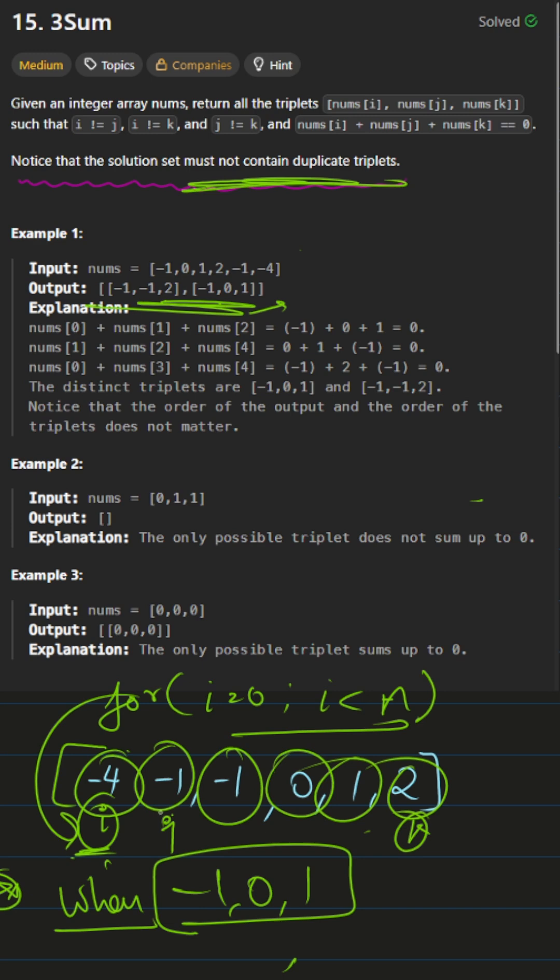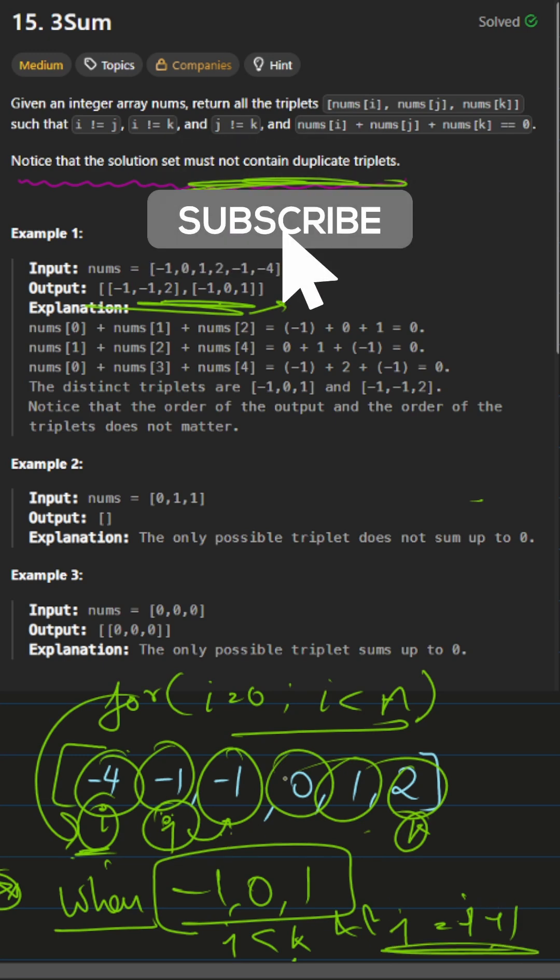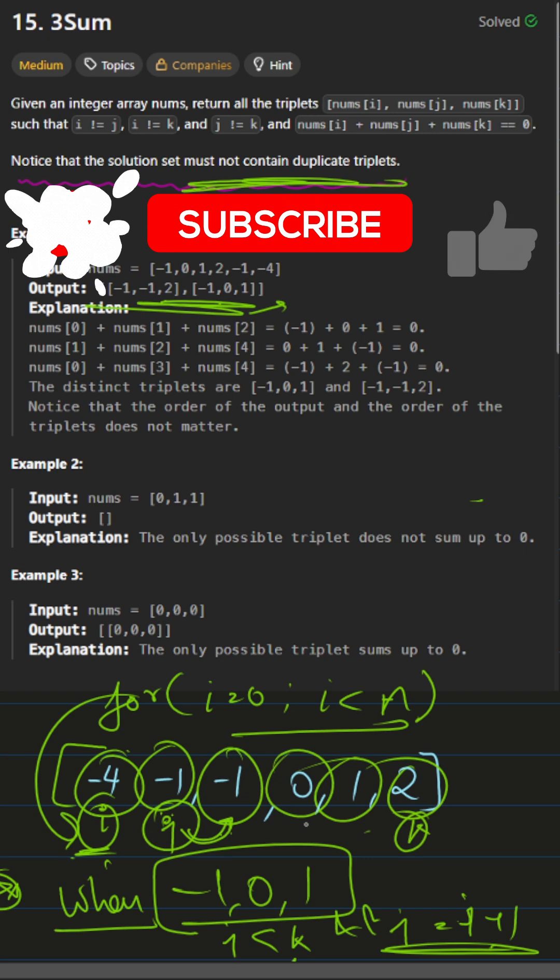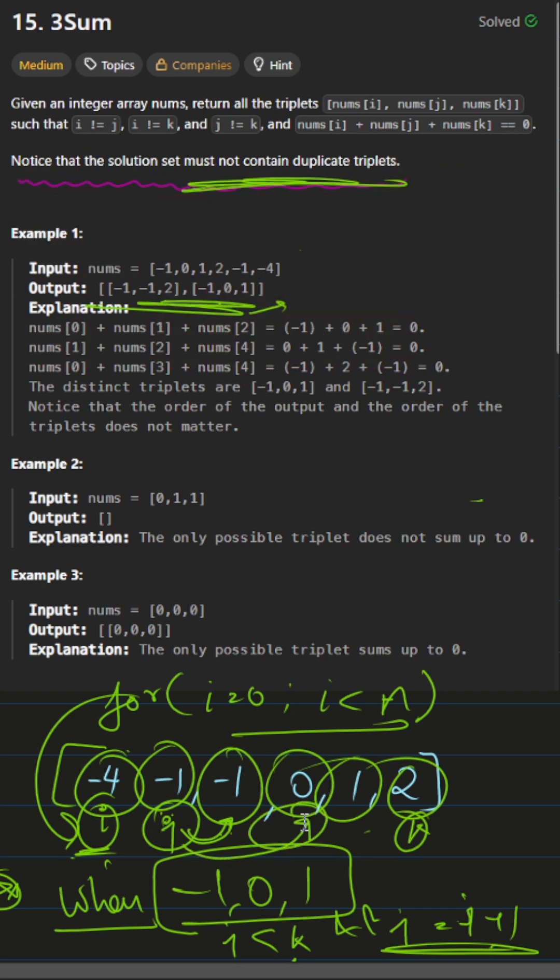So if we move j forward, it should not move to a duplicate element. We'll just do a check that if j is less than k and nums of j equals nums of j plus one, if these two are equal, that means duplicate element and we do a j plus plus. So we won't move j over here. Instead, we will move j over here. That's a simple way of how we'll skip the duplicate elements and find the pairs which will have a sum equal to zero.